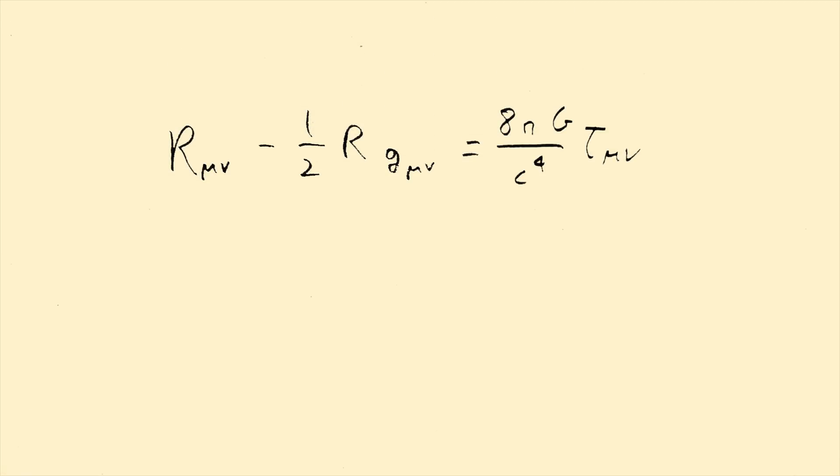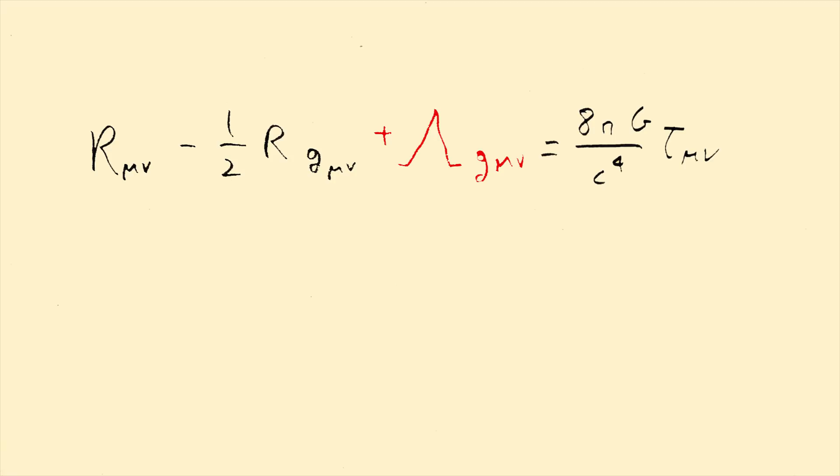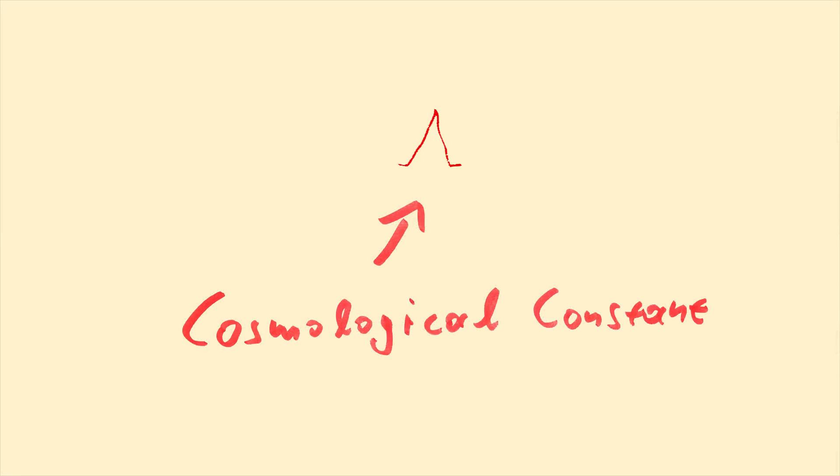So, in order to fix his theory, he added this term to his equations. Lambda times g mu nu. This lambda is called the cosmological constant. Its purpose back then was to counter the gravitational collapse.